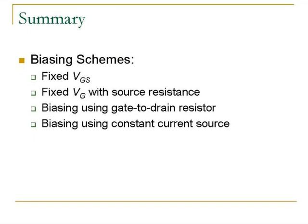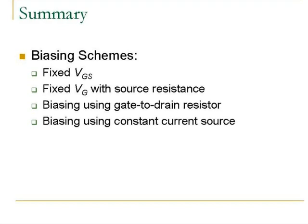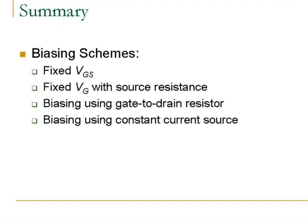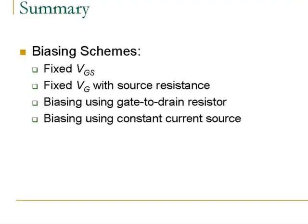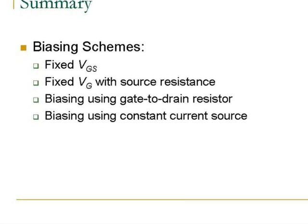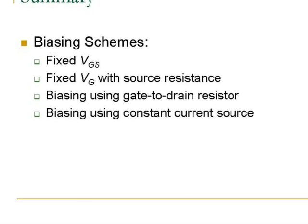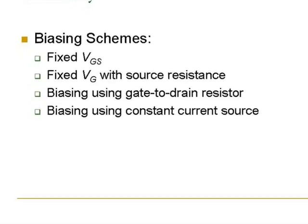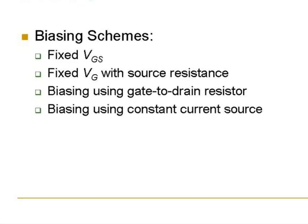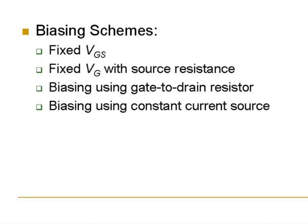So in summary we have different biasing schemes. We have the fixed gate source voltage biasing. However we saw that this biasing scheme is not good because the drain current there is too much dependent on the parameters of individual MOSFETs which may vary even in the same batch of MOSFETs. Therefore we have the other three schemes which try to minimize this dependence on MOSFET parameters.